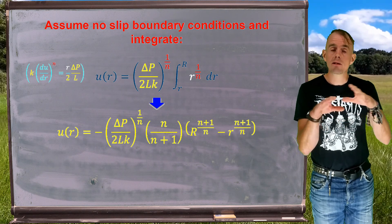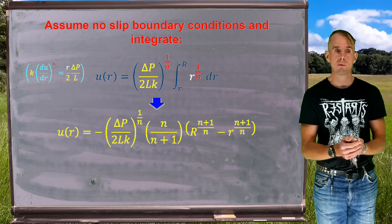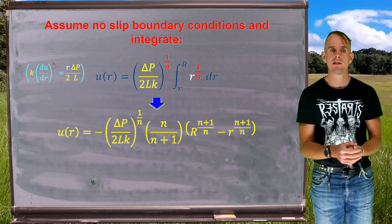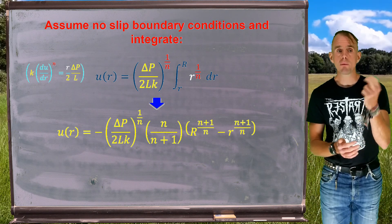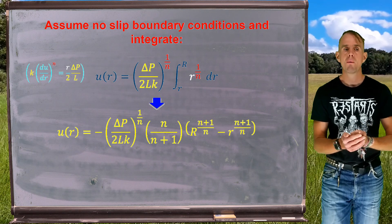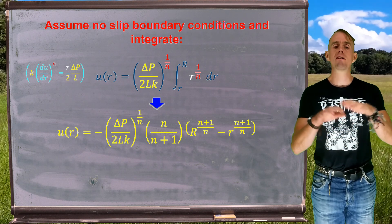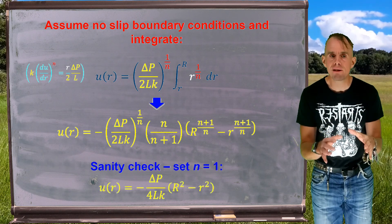And so that sanity check applies to any expression that we derive with a power law fluid. So let's implement that sanity check here. If we put n equals 1 in that slightly unwieldy expression, we revert to the form of our Newtonian velocity field, our parabolic flow. Very useful check.